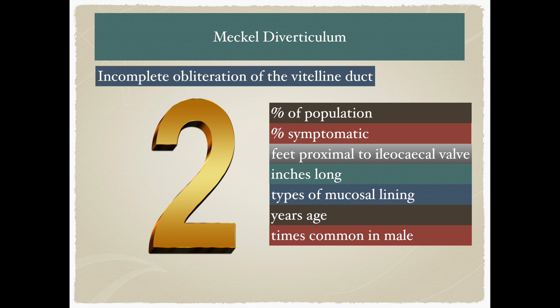Generally, the rule of two has been used to describe this condition. It is seen in 2% of infants, and it is the most common congenital anomaly. Generally 2% of the affected population are symptomatic. It is most commonly present 2 feet proximal to the ileocecal valve, is commonly 2 inches long, can be lined by two mucosas — pancreatic and gastric ectopic mucosas — generally occurs below two years of age, and is two times more common in males.